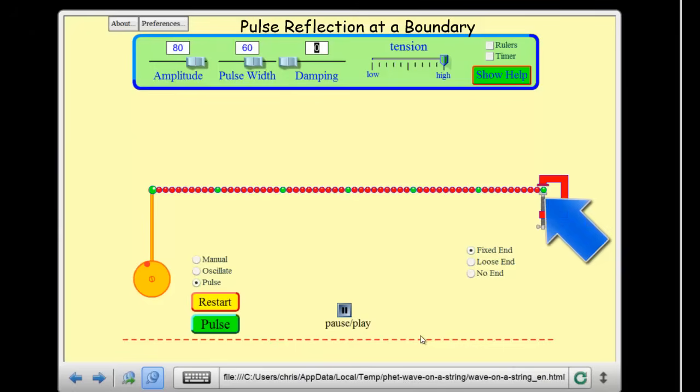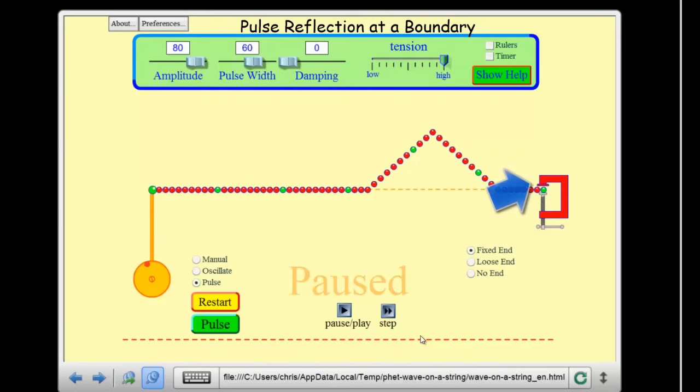So if I send in the pulse, I slow it down and start to step it as we get close to the barrier. This red bead here is pulling up on the green bead, but the green bead is held fixed, and that means it's going to exert a reaction force on the red beads. And that means there's generally going to be a force pushing downwards on these beads here as a reaction force.